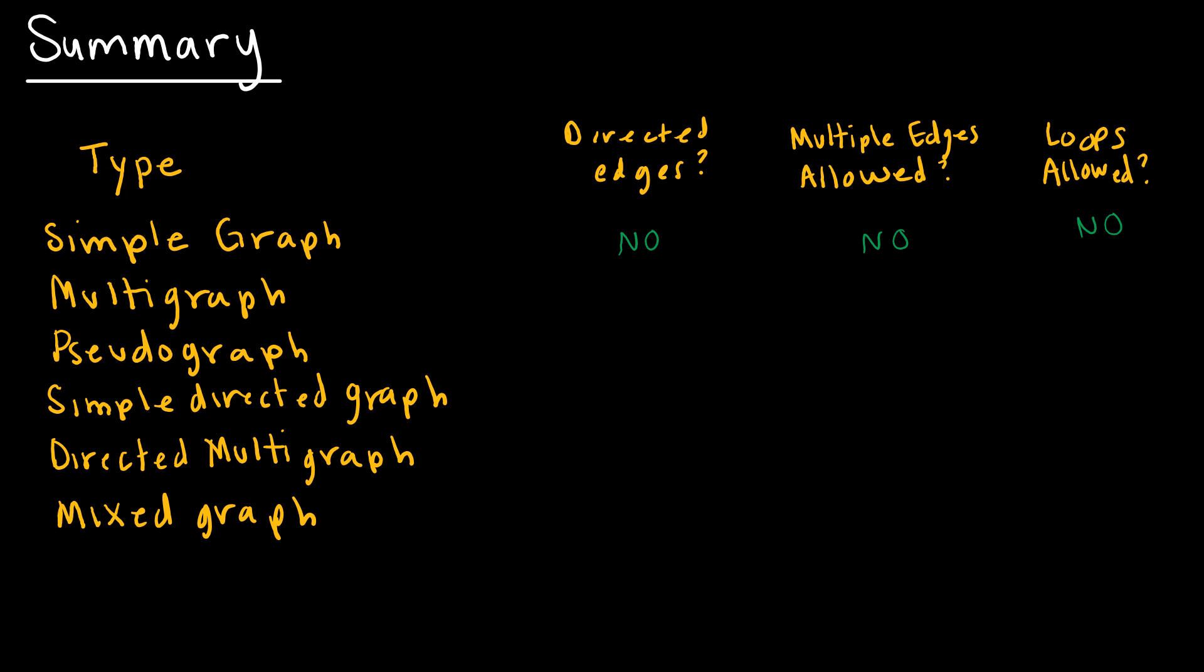Now we talked about a multigraph. A multigraph said you can have multiple edges connecting the same two vertices. So again, still not directed, but yes, multiple edges are allowed, but I still cannot have loops. A pseudograph is still not directed, but it can have both multiple edges and loops.